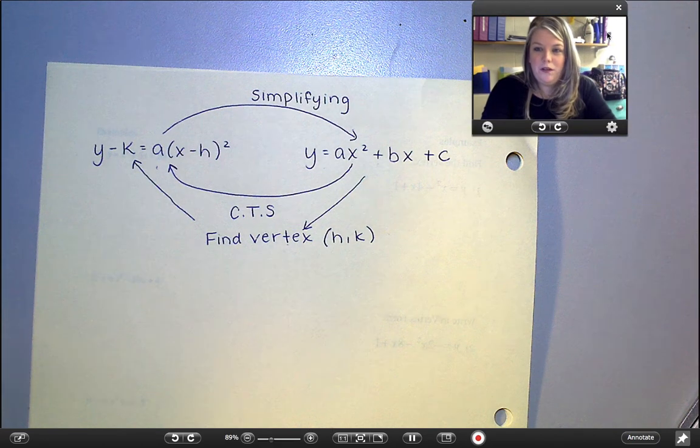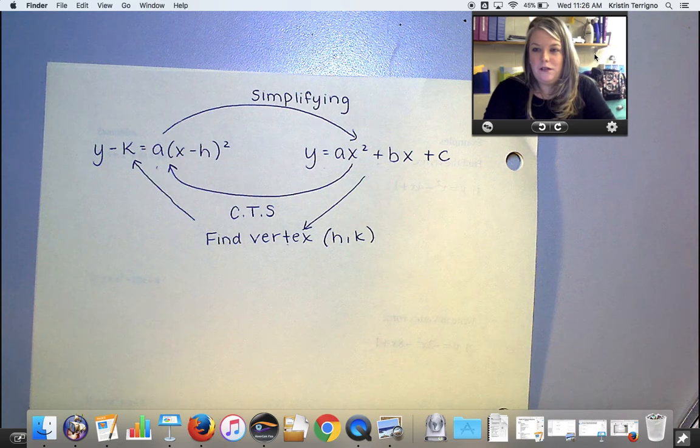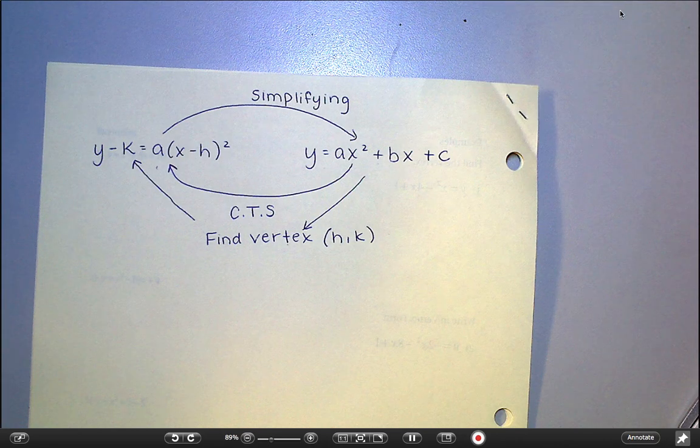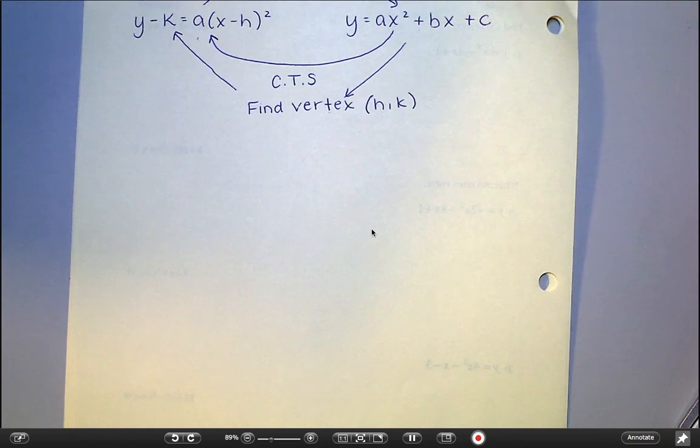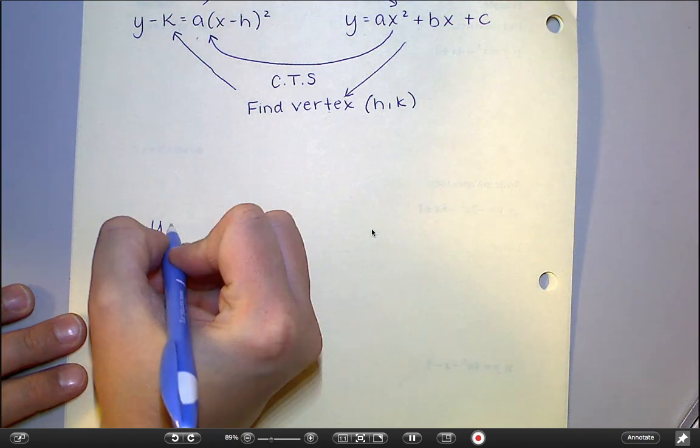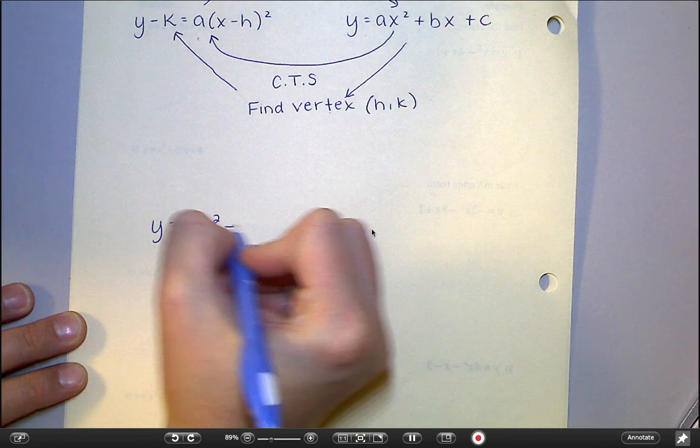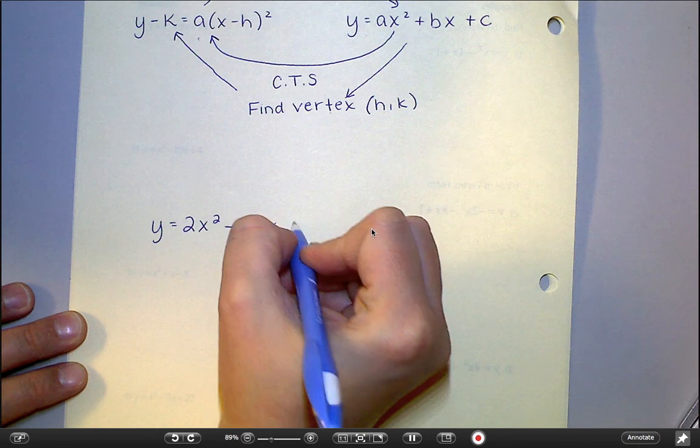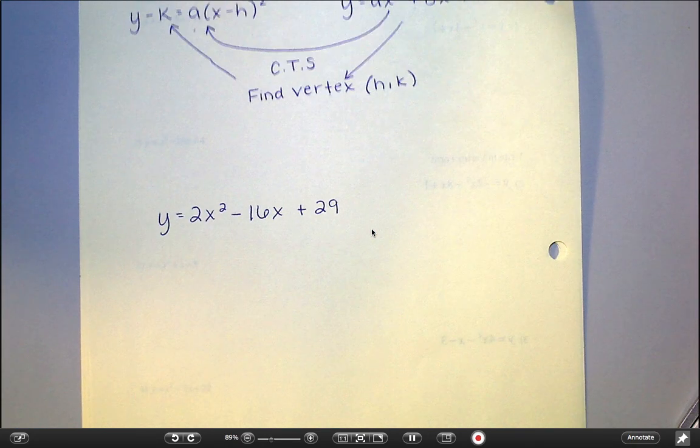So I'm going to walk you through one of these as soon as I get rid of my face here. That did not get rid of my face. There we go. So let's take this example. Y equals 2x squared minus 16x plus 29. That's the example I'm going to work with first.